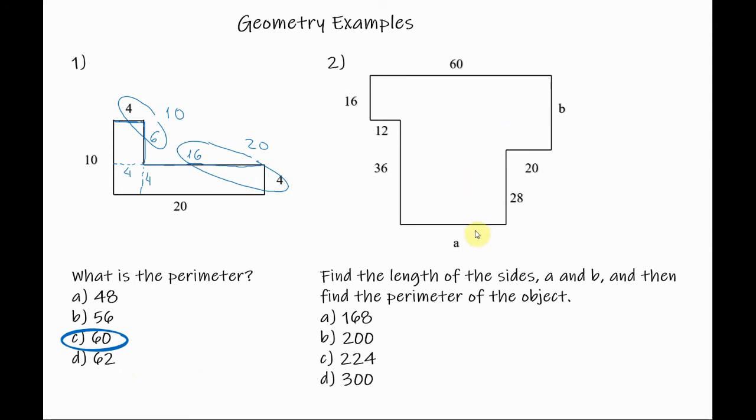Okay, if you're back, let's work on example 2. Here we will find the length of the sides A and B and then we'll find the perimeter of the object as well. Pretty much the same as the first example. So let's start off by finding the length of side A.